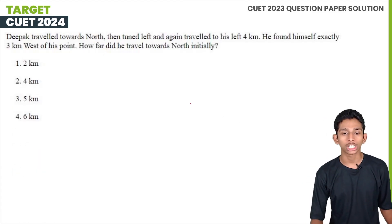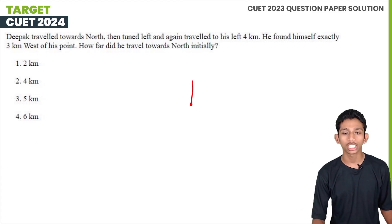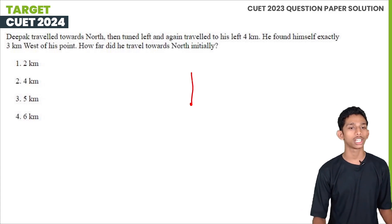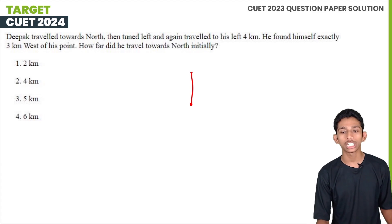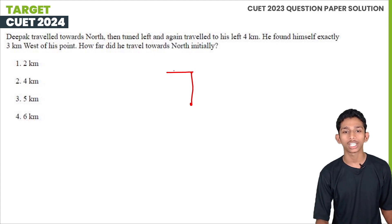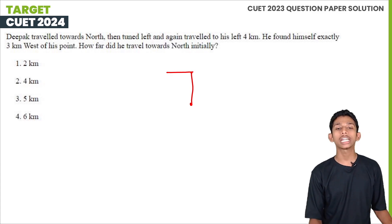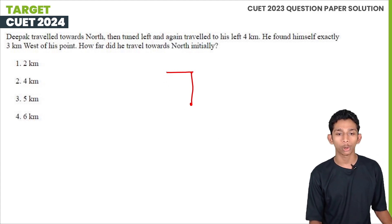Next question. A person traveled towards north. Then he turned left. Again, he traveled to his left 4 km. He found himself exactly 3 km west of his starting point. How far did he travel towards north initially?